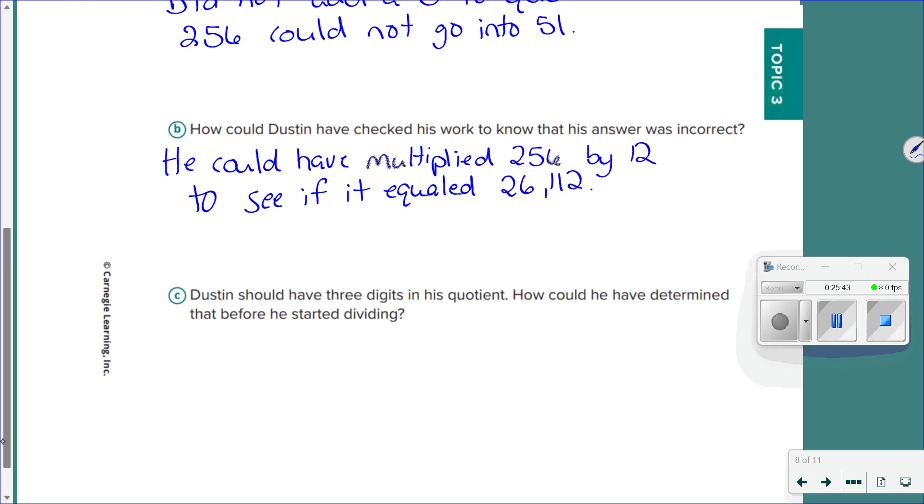And Dustin should have three digits in his quotient. How could he have determined that before he started dividing? Kaylee? He could have used estimation. Any questions? Yes? What'd you put? No, not necessarily. All right, next page.